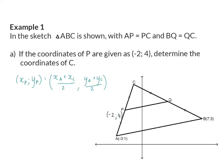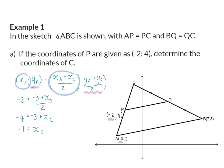If you choose to use the formula, you will have to break it up and do the x-coordinates separate from the y-coordinate. For my x-coordinate of P, we know that it is minus 2, and this value is determined by adding the other two x-coordinates and dividing by 2. Solving the x-value of C gives minus 1, and solving the y-value of C gives 7. So C's coordinates will be minus 1 and 7.